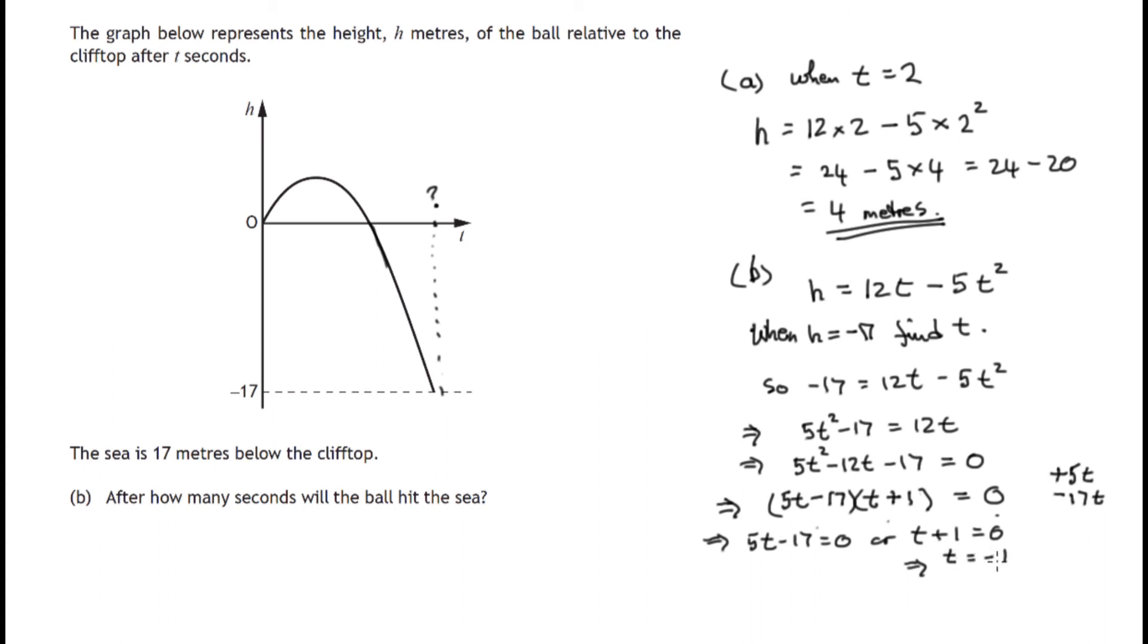Now in the case of t plus 1 being zero, we take 1 from both sides, t would equal negative 1. And we're getting a time before the ball was kicked, so t we know is greater than zero. So this solution is not valid.